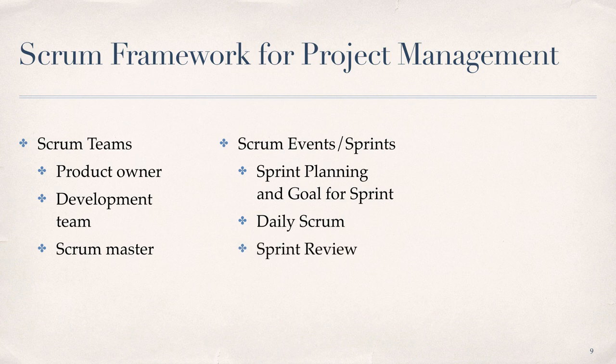A sprint review is held at the end of the sprint to inspect the incremental product deliverable and adapt the product backlog if needed. During the sprint review, the Scrum team and stakeholders collaborate on lessons learned from the work done in the sprint. In this class, the sprint review will occur at the beginning of the class meeting just prior to planning the next sprint. For example, sprint one will cover modules two and three, and the sprint review for sprint one will occur on the first day of module four just prior to the sprint planning session for sprint two.